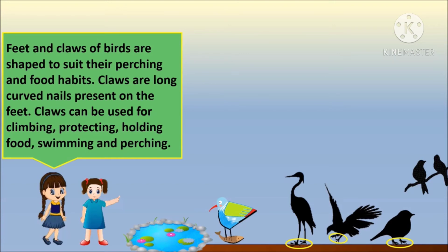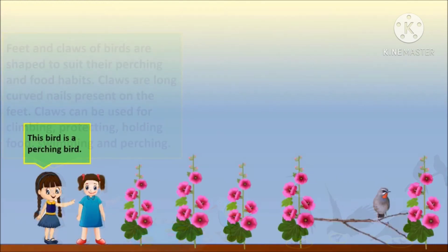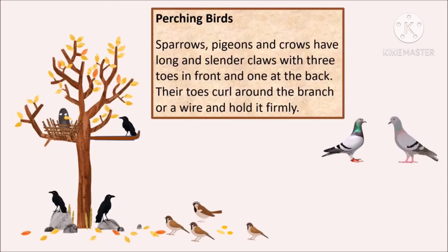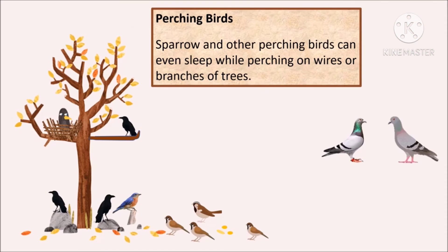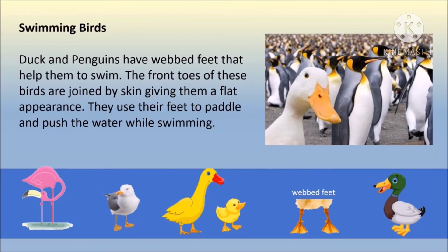Feet and claws of birds are shaped to suit their perching and food habits. Claws are long curved nails present on the feet and can be used for climbing, protecting, holding food, swimming and perching. Sparrows, pigeons and crows are perching birds — they have long and slender claws with three toes in the front and one at the back. Their toes curl around a branch or wire and hold it firmly. Sparrows and other perching birds can even sleep while perching on wires or branches.